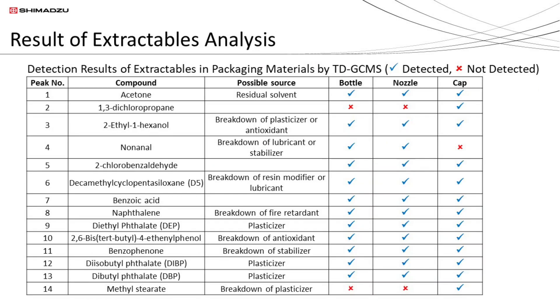This is a summary of the volatile and semi-volatile extractable results in the packaging. Three types of plasticizers, peak 9, 12 and 13, which are common additives in polymers, were detected.